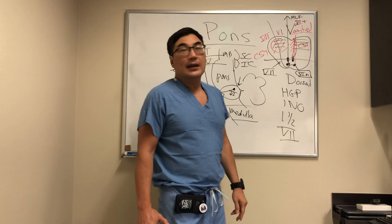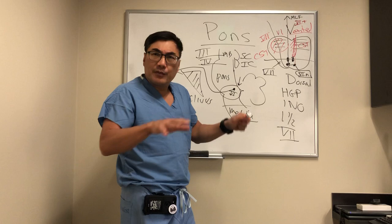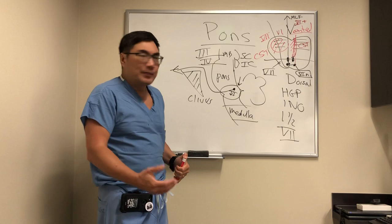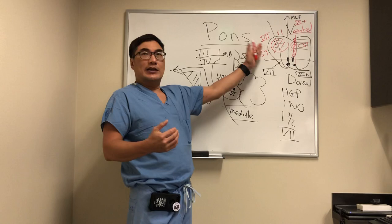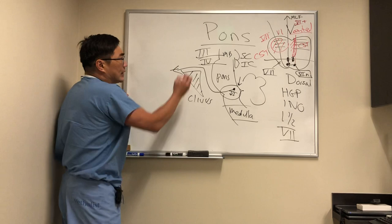If the lesion is more caudal, it will involve the lower brainstem cranial nerves, so you might get a seven, an eight, a Horner syndrome, a five, and a six. This is called Foville. Foville just has a lot more involvement because it's more extensive — either rostrocaudally or medial-laterally. It's simply bigger, with way more structures affected.